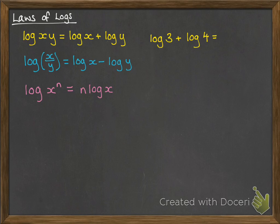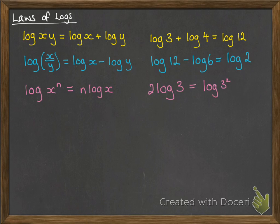Right, let's look at how this works in practice. So we've got log 3 plus log 4 is equal to, well 3 times 4 is 12. Log 12 minus log 6, 12 divided by 6 is 2. And 2 log 3, well we're going to take that 3 and raise it to the power of 2. So that will be log 9.